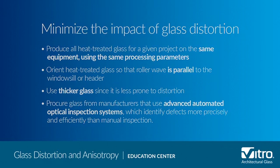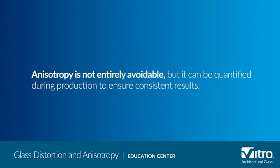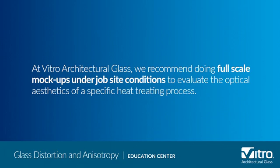Conversely, strain patterns in the glass from heat treatment can cause anisotropy, which is not considered a defect in the glass. Anisotropy is not entirely avoidable, but it can be quantified during production to ensure consistent results. That's why at Vitro Architectural Glass, we recommend doing full-scale mock-ups under job site conditions to evaluate the optical aesthetics of a specific heat treating process.